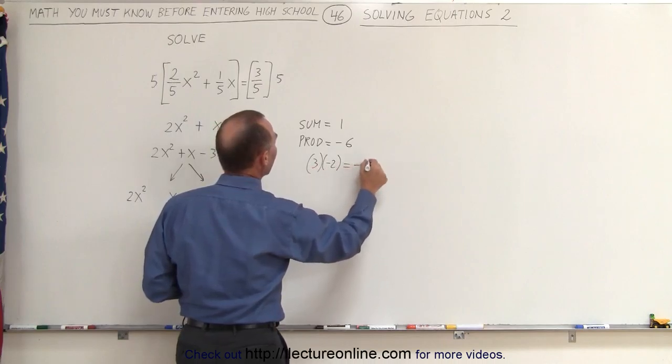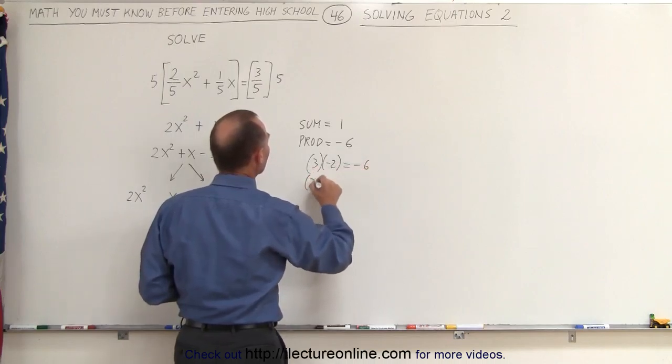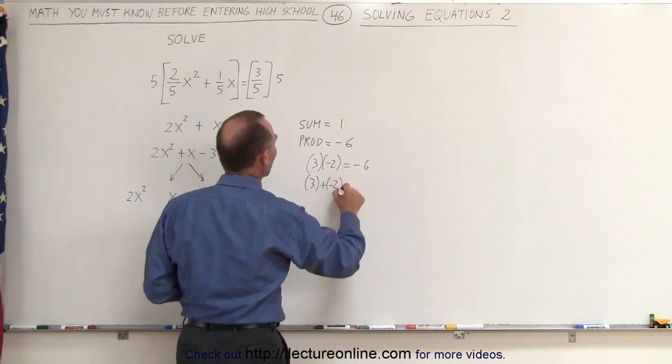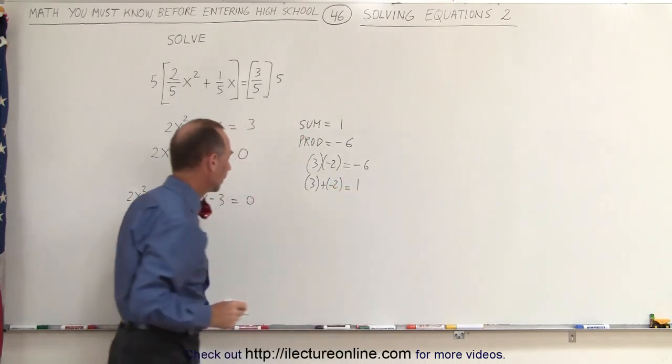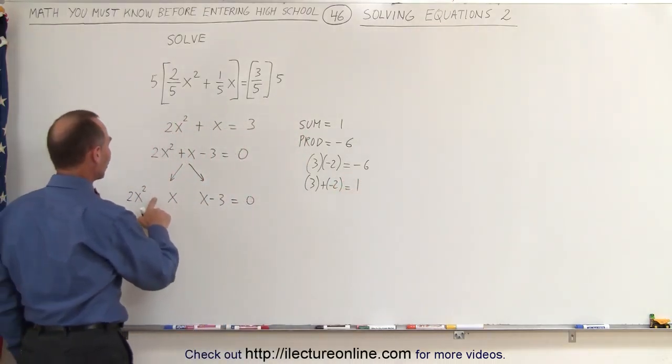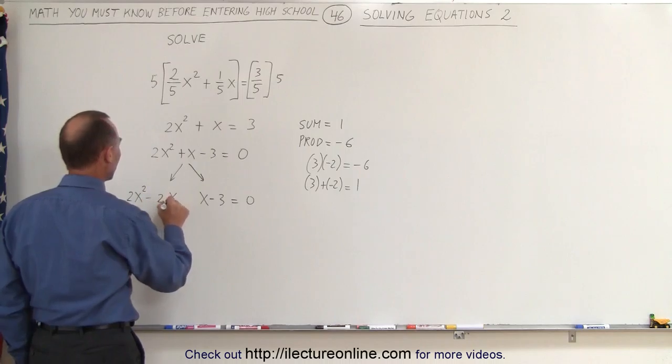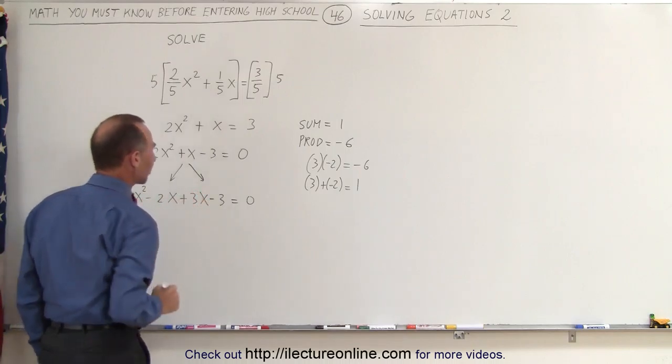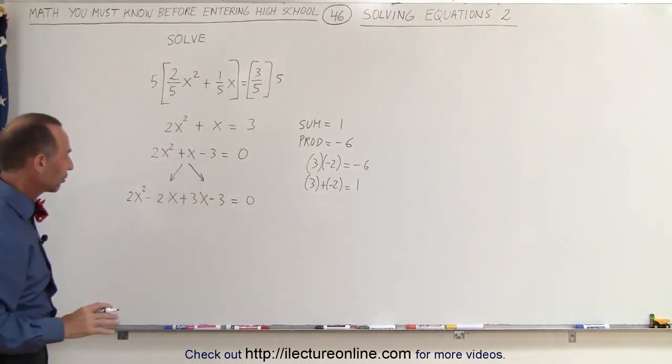When you multiply them together, you get minus 6. When you add them together, 3 plus minus 2, you get a positive 1. That means we're going to write this as follows. This is a -2x and a +3x. Now let's see if we can factor this.